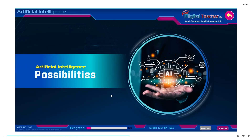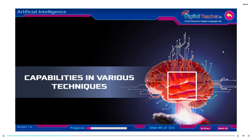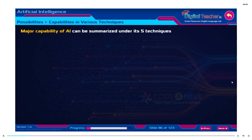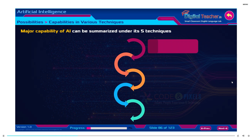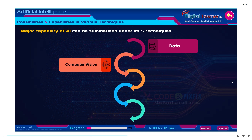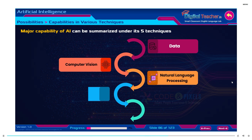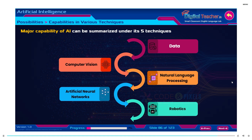Artificial intelligence possibilities. The major capabilities of AI can be summarized under its five techniques: Data, Computer Vision, Natural Language Processing, Artificial Neural Networks, and Robotics.